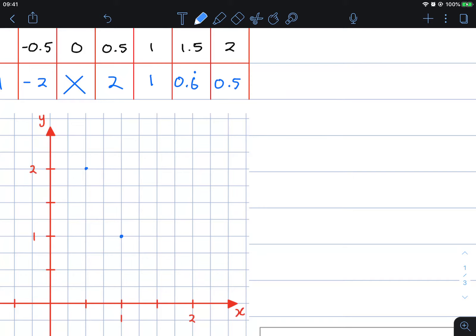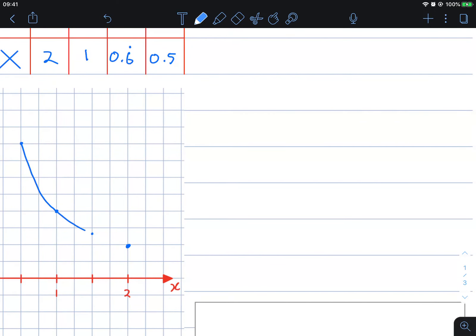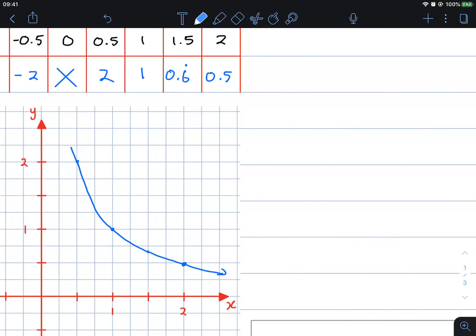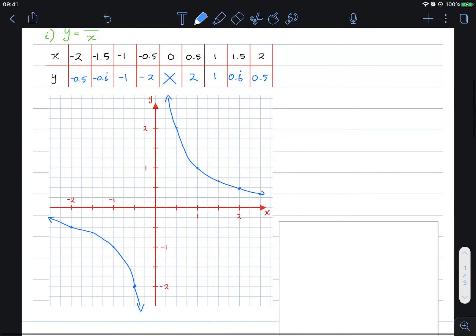At 1 we get 1. At 1.5 we get 0.6. This is 0.5, so we know that's going to be there. It might be approximately there. So graphing this one continues like so. You should actually get two branches like this.